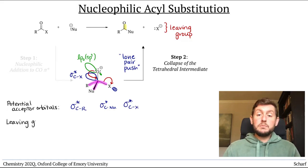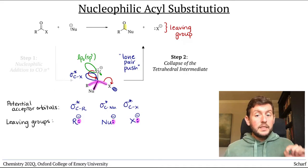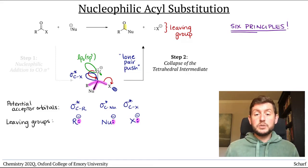The three possible leaving groups here are R-, Nu-, and X-, and they've all left with the lone pair. And we have a way to determine the stability of lone pairs: the six principles that we've used regularly over the last two modules.